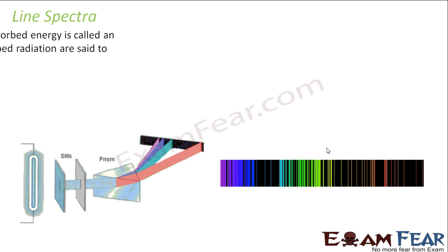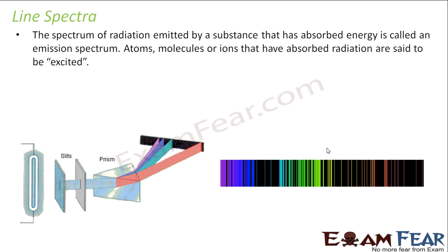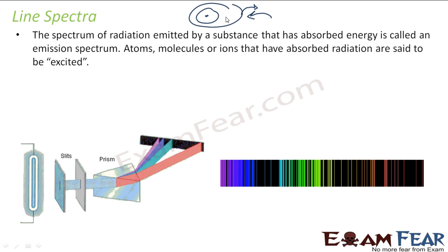We also know the line spectra concept: if there is an atom and you put some light on it, the electron goes to a higher excited state and comes back. When it comes back, it emits light. When it goes to a higher excited state, these electrons emit rays sometimes in the range of 400 to 750 nanometers, and thus you see the line spectra. The line spectra is the spectrum of radiation emitted by a substance that has absorbed energy — it's called emission spectrum.